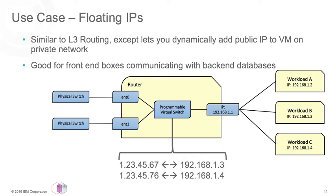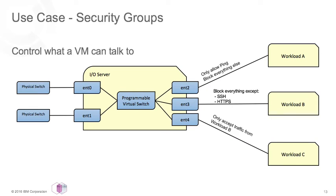Security groups can be used with VXLAN networks or with your traditional flat or VLAN-based networks. These groups control what workloads can talk to. It is important to note that this is controlled in the hypervisor itself — these rules are not put into the client's operating system. So no matter the operating system — AIX, IBM i, or Linux — these rules get enforced.